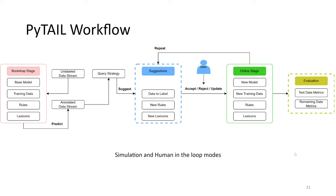The bootstrap stage starts with a base model, training data, and some rules and lexicon. The training data can be a very small seed dataset used to initialize the model. You then take an unlabeled data stream, feed it to the bootstrap stage, and get an annotated data stream using the rules, the training model, and the lexicon. This annotated data stream is then passed to various active learning techniques and, using the defined query strategy, leads to suggestions for the human to annotate. These suggestions can be not only data items to label but also new rules or new lexicons, which will later be used as features for the model.